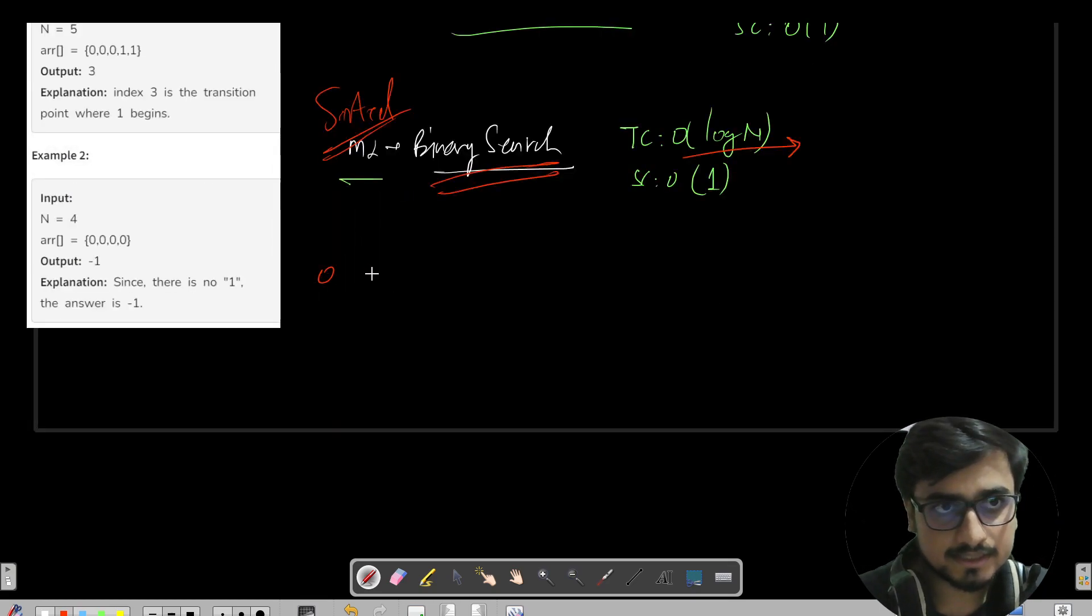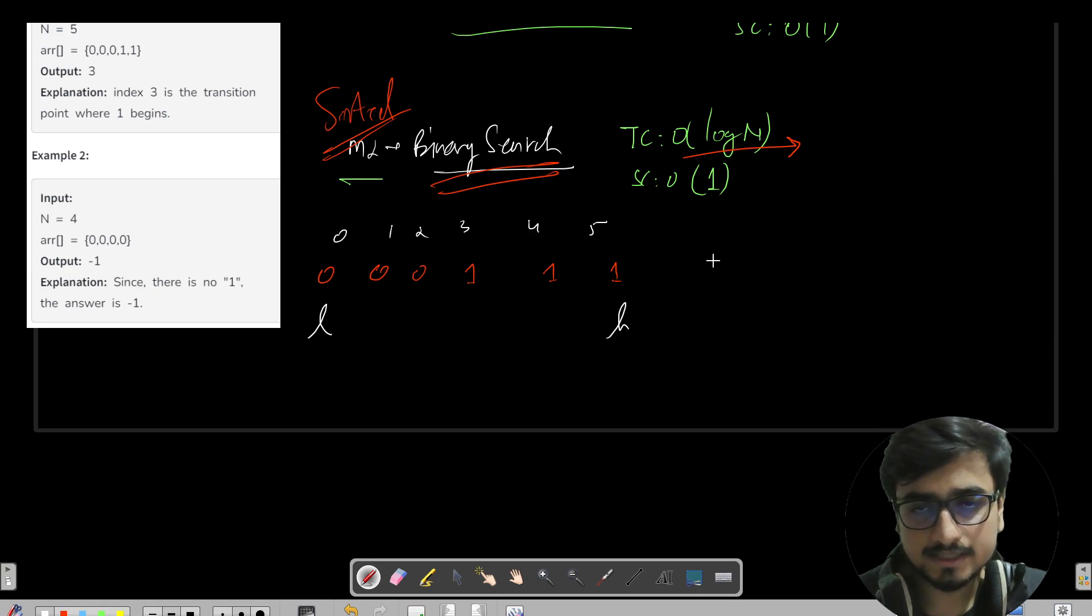Okay, so hum kya karenge? We will have, let's say, elements like zero, zero, zero, and we have one, one, and one more one. The index is 0, 1, 2, 3, 4, 5. This will be our low point, that is your starting point, and this will be your ending point, let's say high.